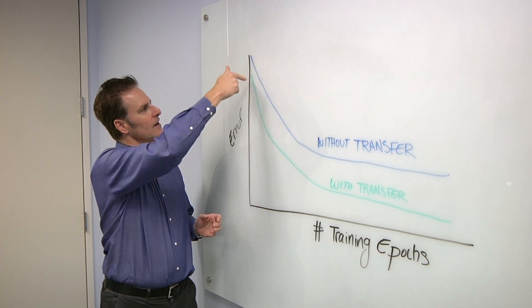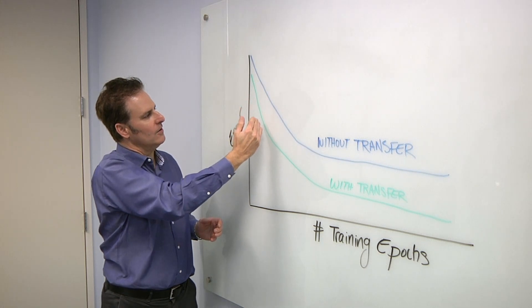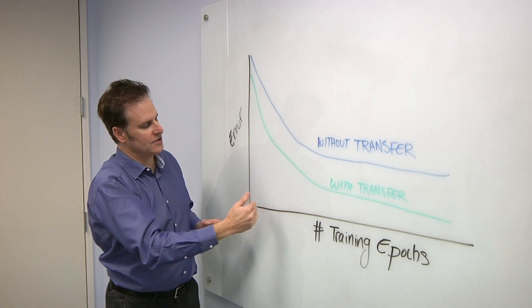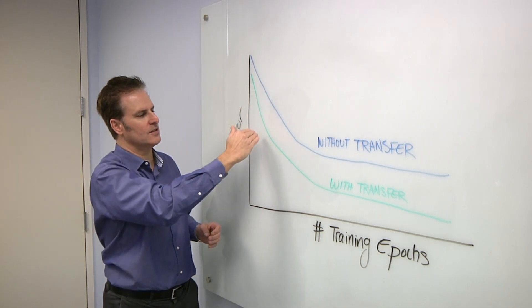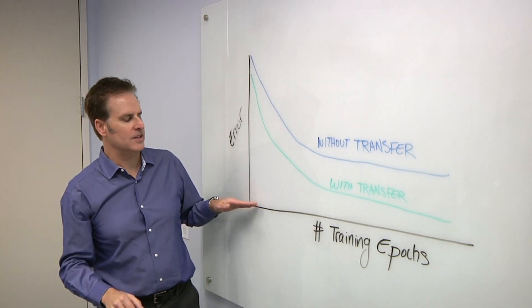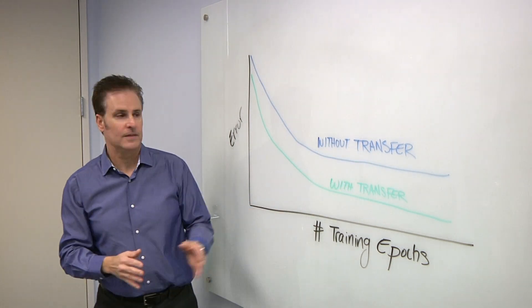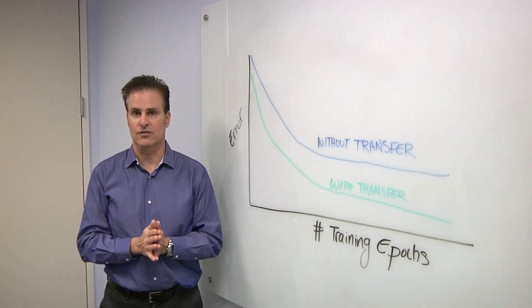When I'm able to take the learnings from the other context and use that with transfer learning, I get three advantages. One is actually when I start training, I start at a lower level of error. You can see the error level decreases faster as I go through my training epochs. And then the amount of error that I'm able to achieve at the end, even after a long period of training, ends up significantly lower than if I'm not applying transfer learning.